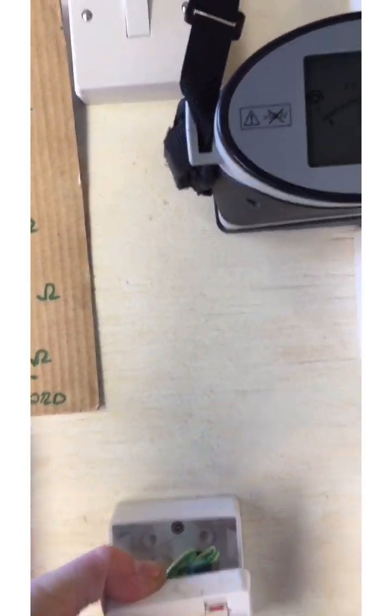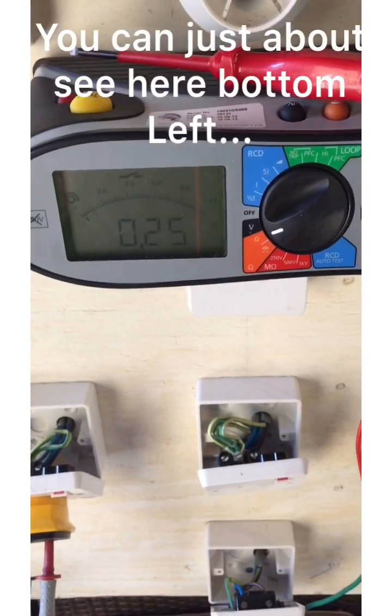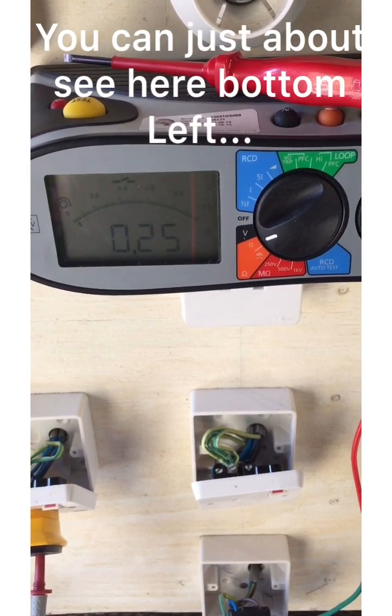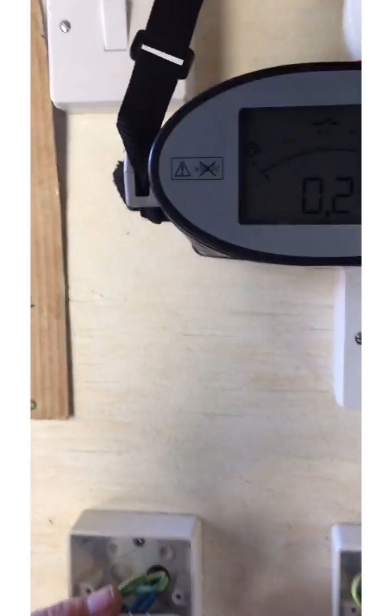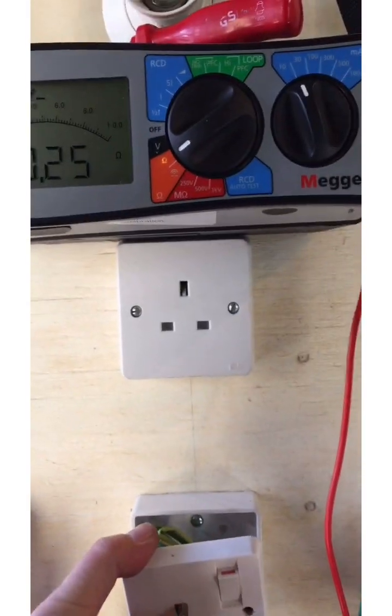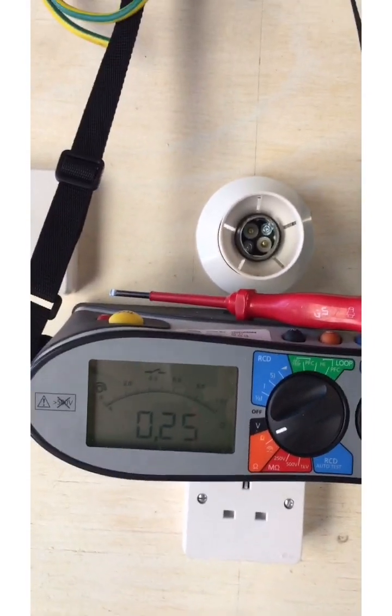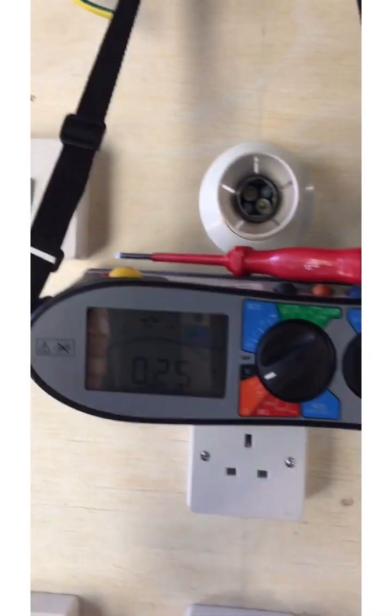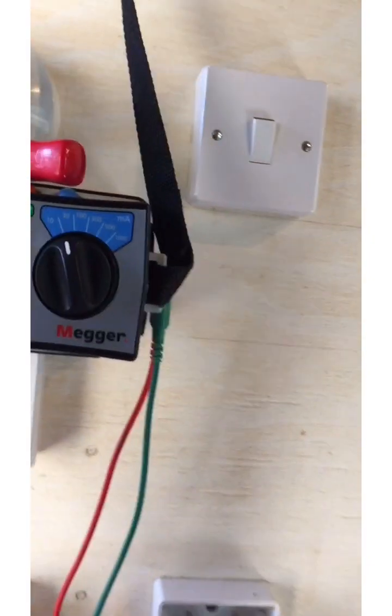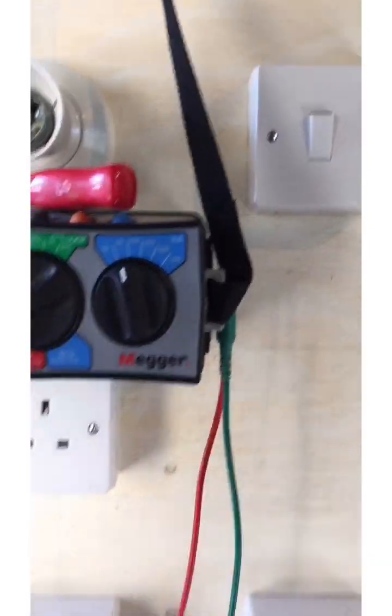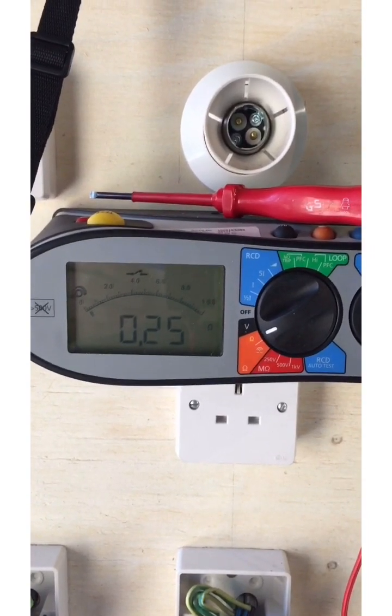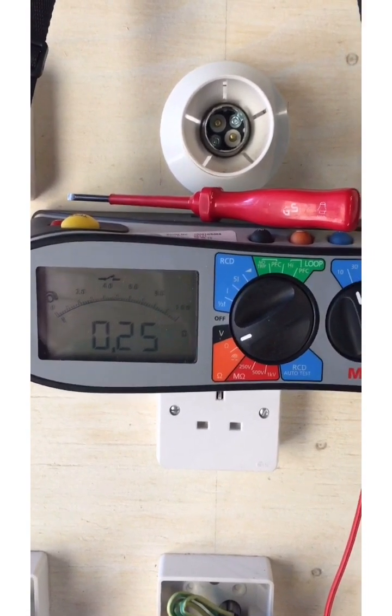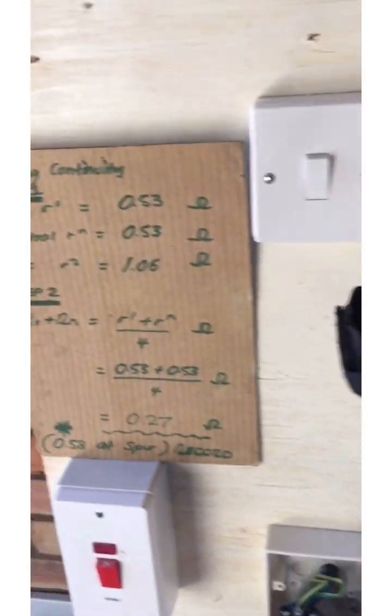So what are we getting there? 0.25, it's all there or thereabouts, I'm happy with that. 0.25, I'm happy with that. It's there or thereabouts. 0.25, again, I'm happy with that. It equates there or thereabouts to the expected values on here.